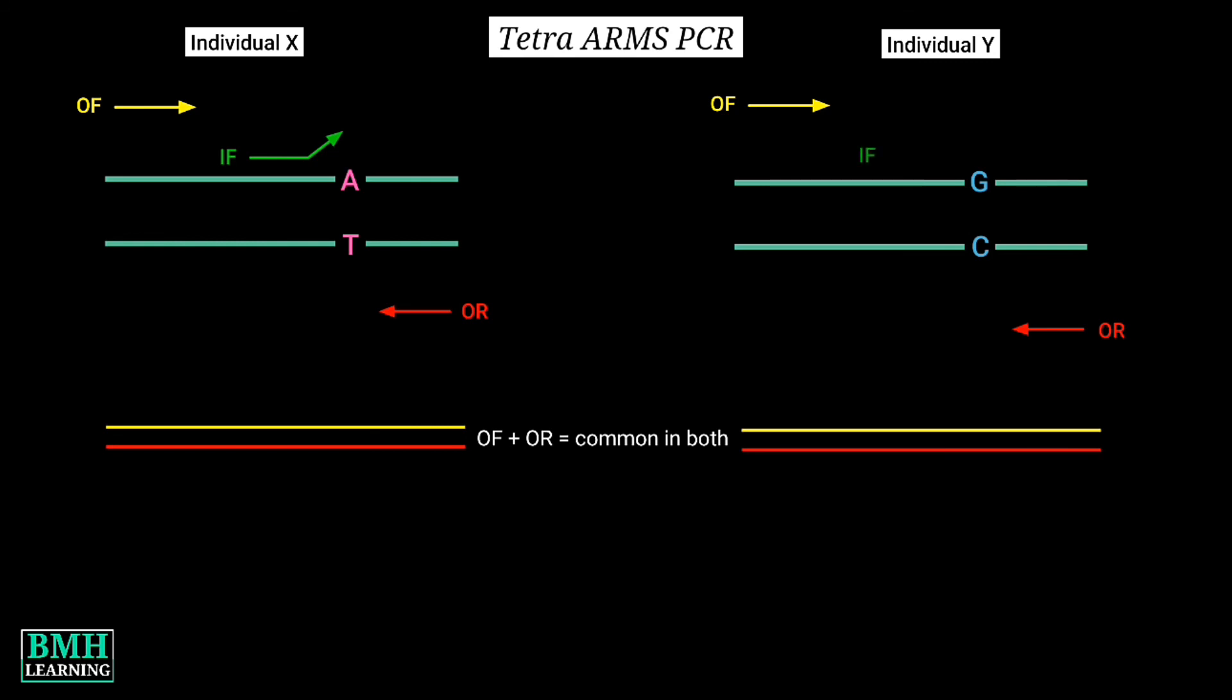But the same internal forward primer will amplify in case of Individual Y. It's because here the primer has got perfect complementarity with the DNA sequence. So this would generate mutant allele specific amplicons in conjunction with outer reverse primer.